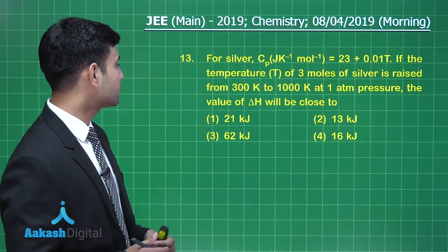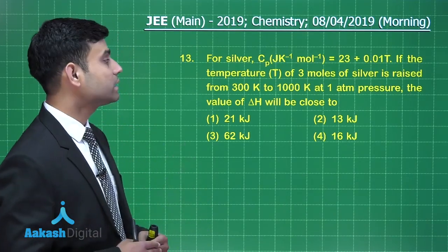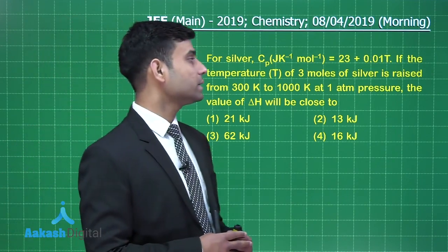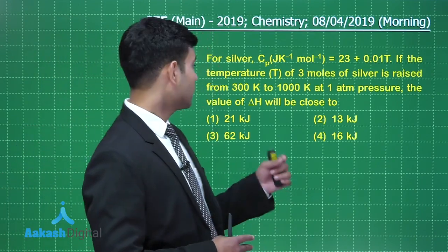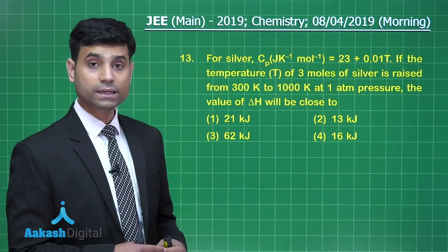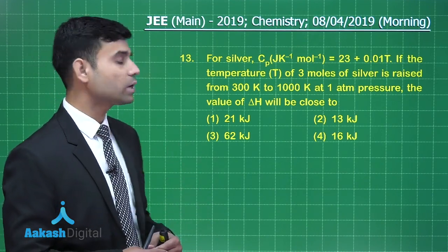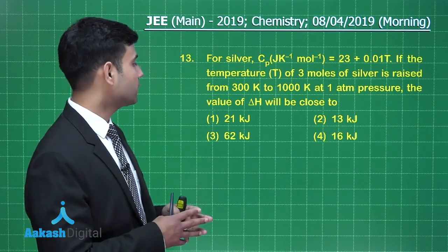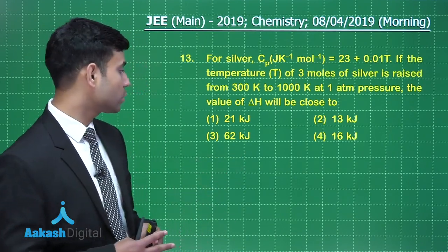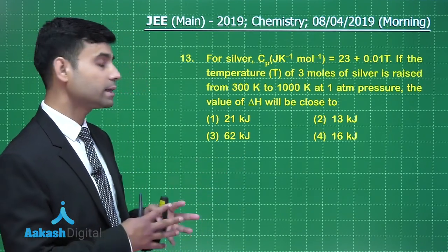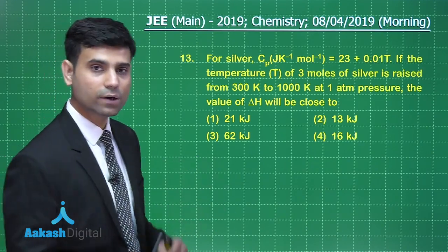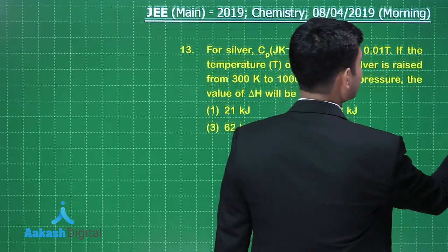The next question says: for silver, Cp in joule per Kelvin per mole equals 23 + 0.01T. If the temperature T of 3 moles of silver is raised from 300 Kelvin to 1000 Kelvin at one atmosphere pressure, the value of ΔH will be close to — options are 21 kJ, 13 kJ, 62 kJ, and 16 kJ.